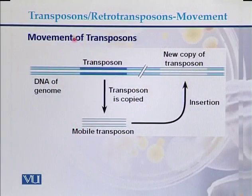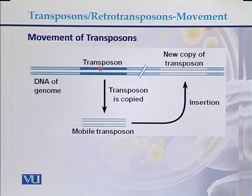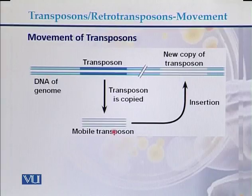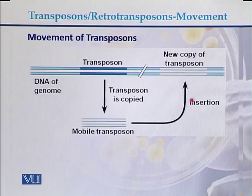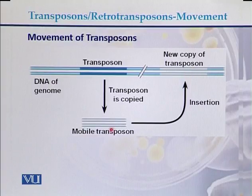Regarding the movement of transposons: when a mobile DNA sequence moves as a segment of DNA from one location to another location of the genome, it is called a transposon. In the case of transposons, the intermediate is DNA — DNA moves directly from one location to another location of the genome.